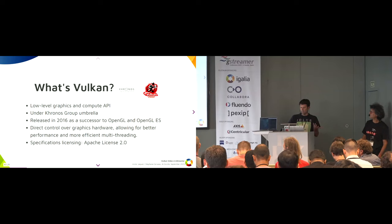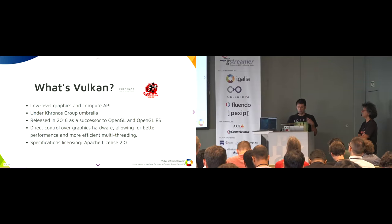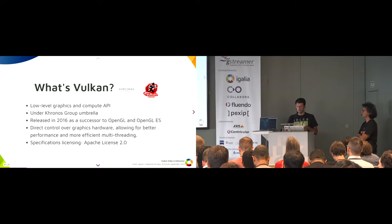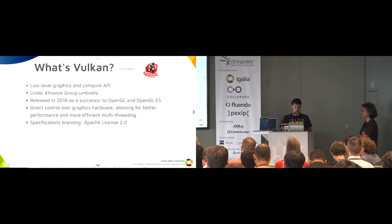The idea is to have direct control of the graphics hardware in Vulkan. This allows better performance, more insight into what can be enhanced when dealing with graphics, and a more efficient multi-threading system. The specification of Vulkan is under Apache license — it's public and open source.